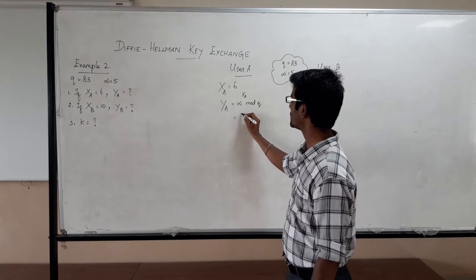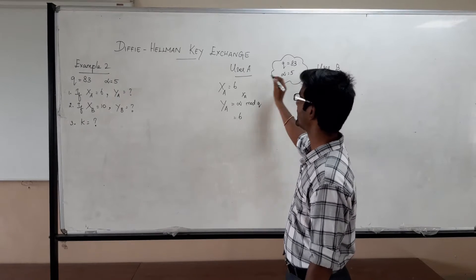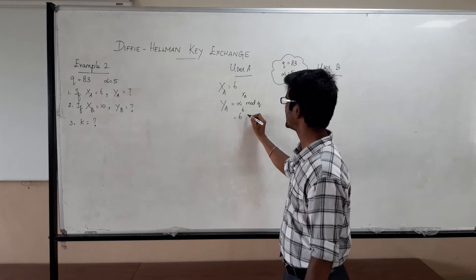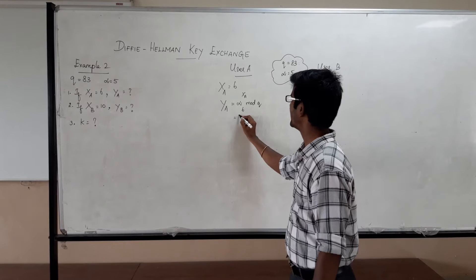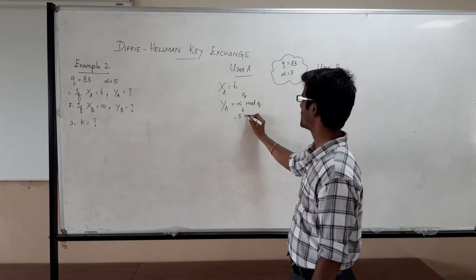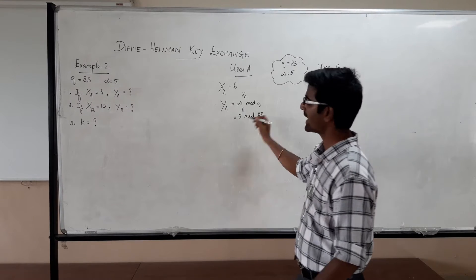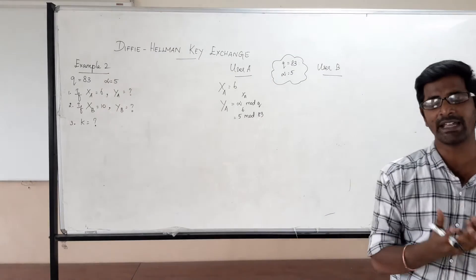Just substitute what is alpha. Alpha to the power XA. XA user is using 6. Now what is the value of alpha here? 5. So 5 to the power 6 mod 83. If you calculate 5 to the power 6 mod 83, we will get 21 as the result.